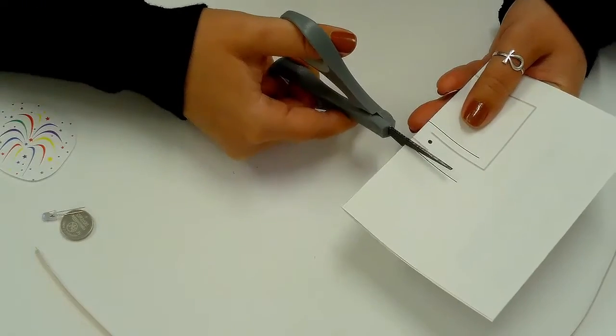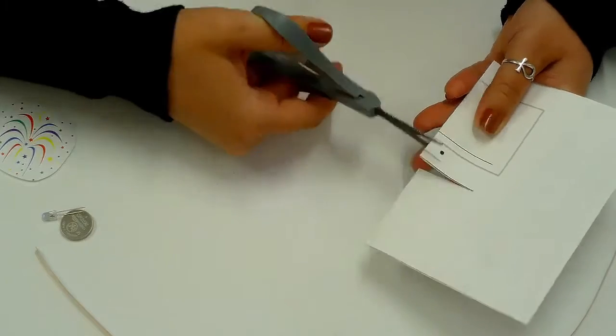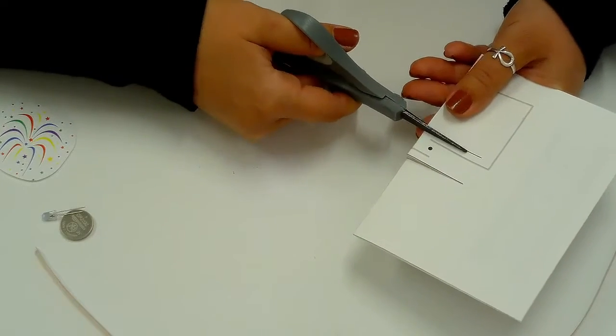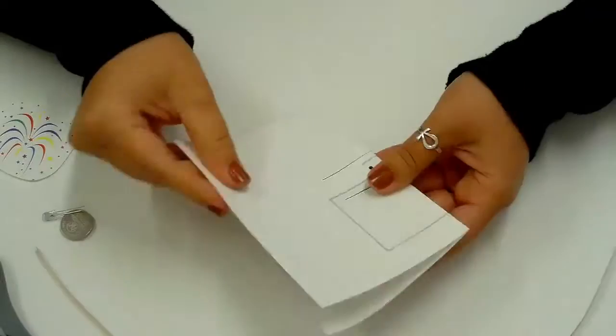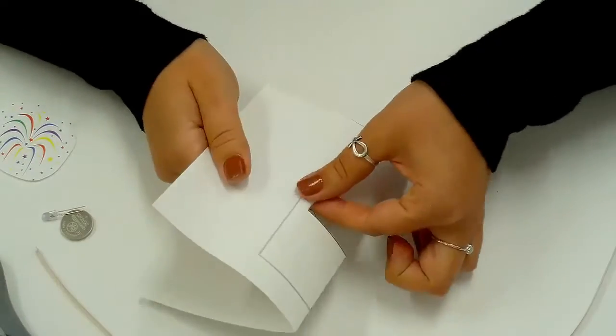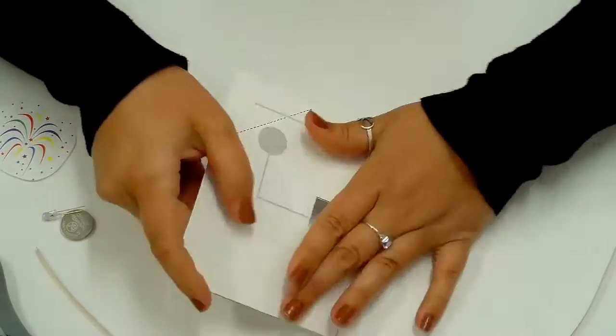Next, cut those solid lines. Press that section up into the card, folding it the opposite way, creasing those folds.